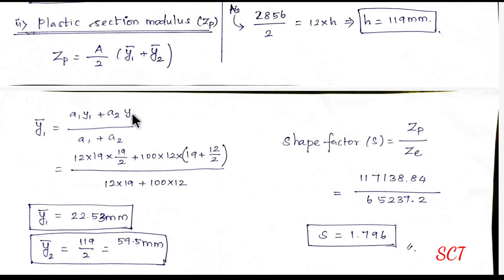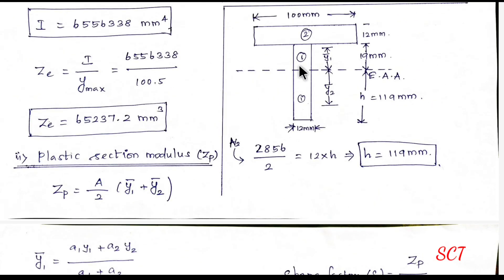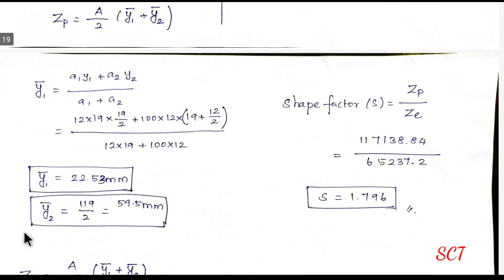A1, y1 plus a2, y2 divided by a1 plus a2. Now, a1 is 12 into 19, a2 is 100 into 12, y1 is 19 by 2, y2 is 19 plus 12 by 2.